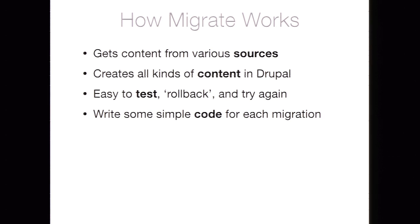How does the Migrate module work exactly? There are a couple of key pieces. When you're creating content in Drupal, you always have a source. When using the Migrate module, the source content is always some kind of structured file of information — the example I'll use today is a CSV file, because everybody's familiar with spreadsheets. And then you have the destination — a content type, taxonomy term, user, comments, some type of content in Drupal being created.